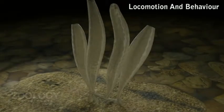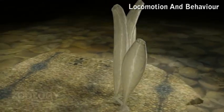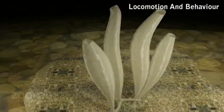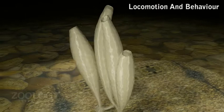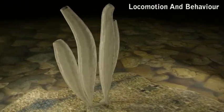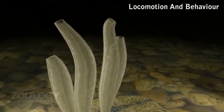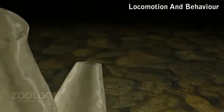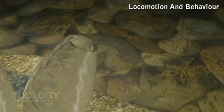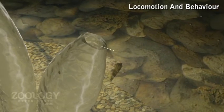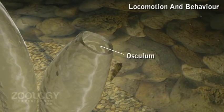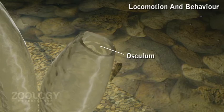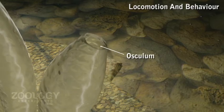Locomotion and behavior. Leucosolenia is not capable of locomotion. It is supposed to possess local contractile powers that appear to be mostly restricted to the region of the osculum. It responds very slowly, and responses are seen several minutes after the application of stimulation.